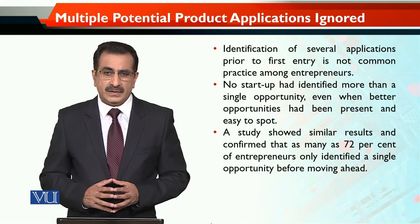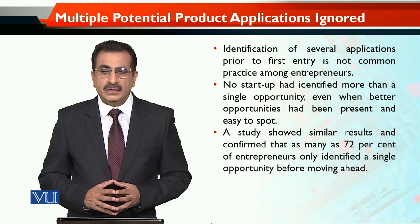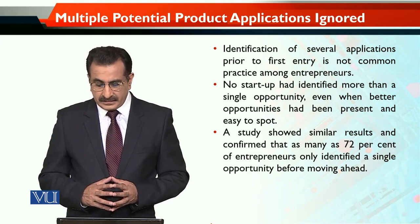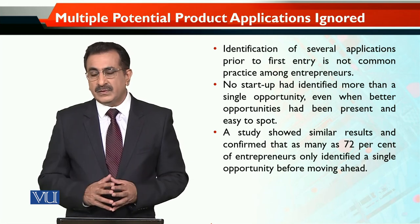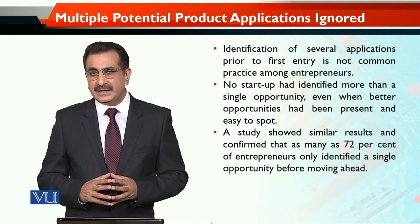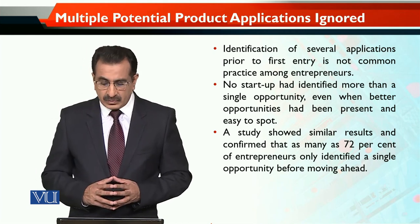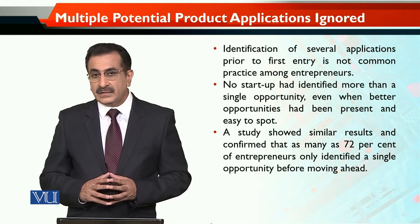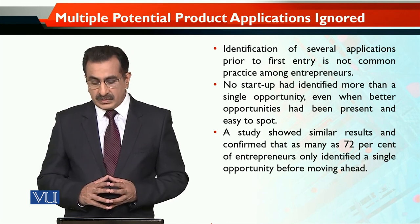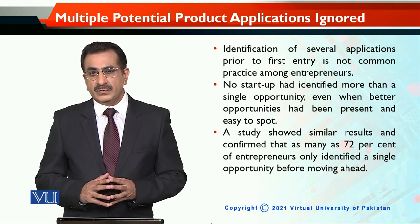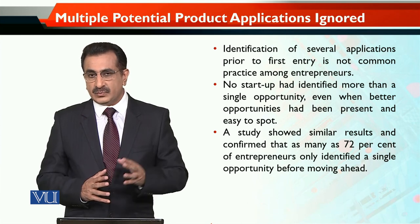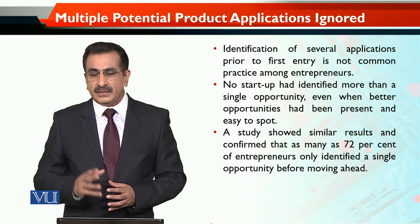Another study with a much larger sample size searched this same question — how companies and entrepreneurs seek opportunities and find applications for high-tech products. The results were the same: a vast majority, 72%, only identified a single opportunity before moving ahead. They found one opportunity, developed their product accordingly, and marketed it. So the chances of success are lower for them compared to those who searched for multiple applications and then selected the best one.